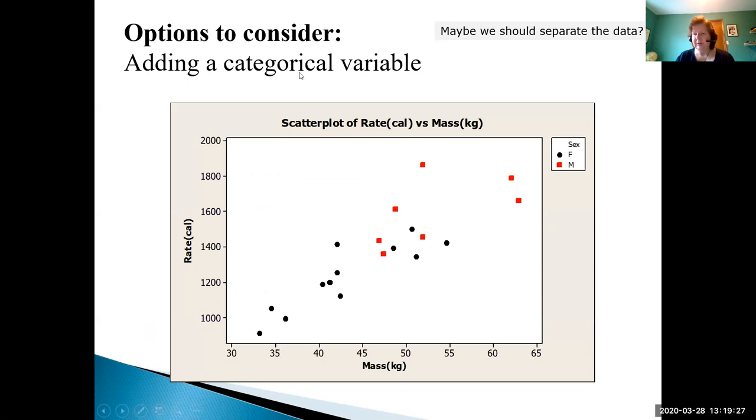Is there a possibility of a categorical variable? You can see here I've identified the male data in red and the female data in black. We've seen before, especially for medical studies, we've recognized that we should potentially be separating these.